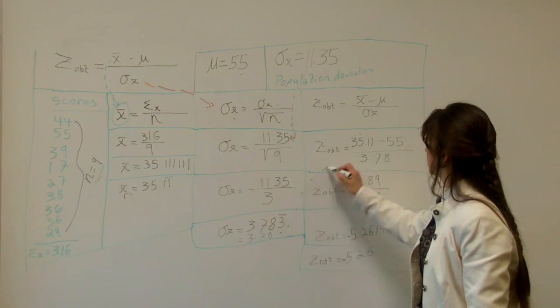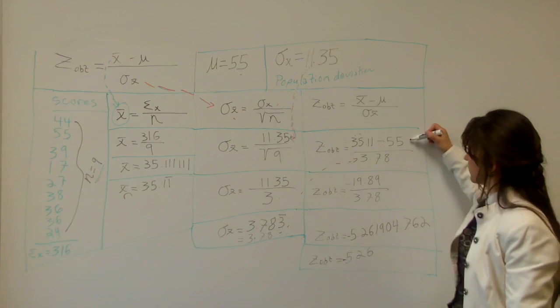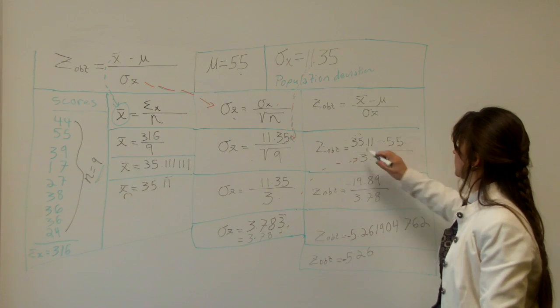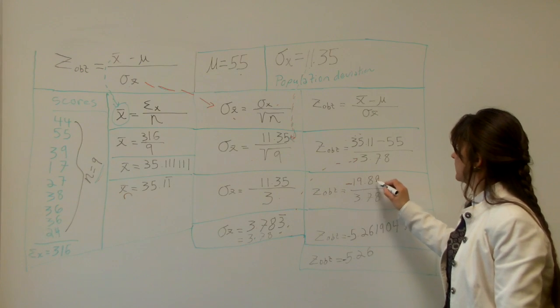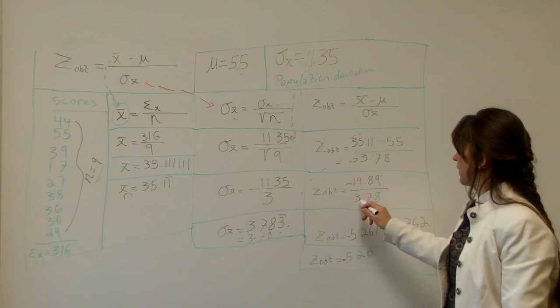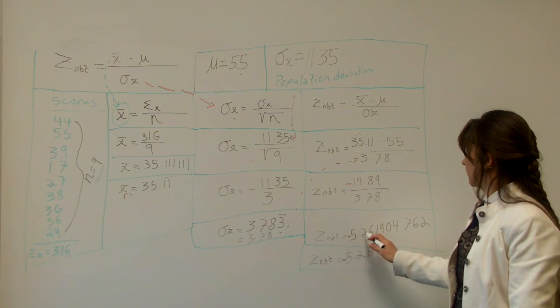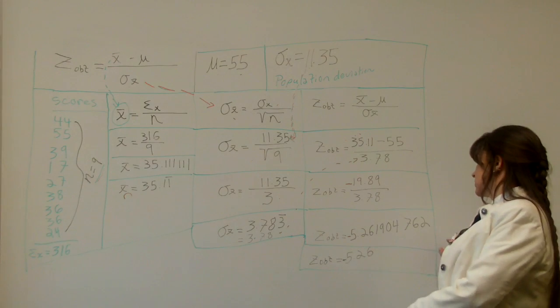So the Z obtained, what we do is first subtract, order of operations. So first we subtract 35.11 minus 55 equals negative 19.89 divided by 3.78, which equals the Z obtained is negative 5.261904762.